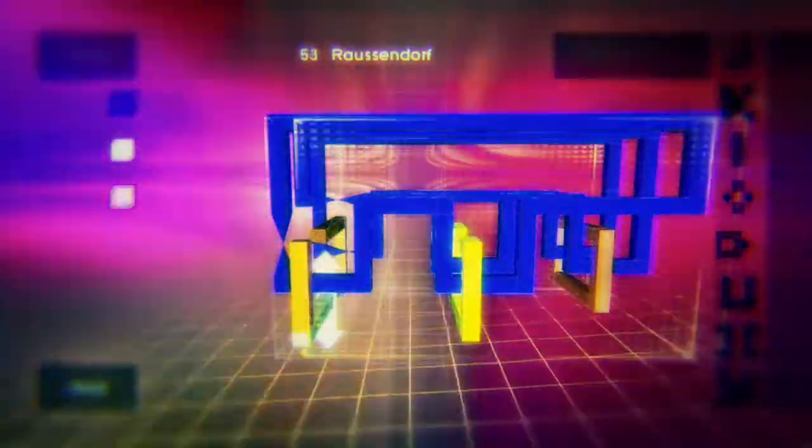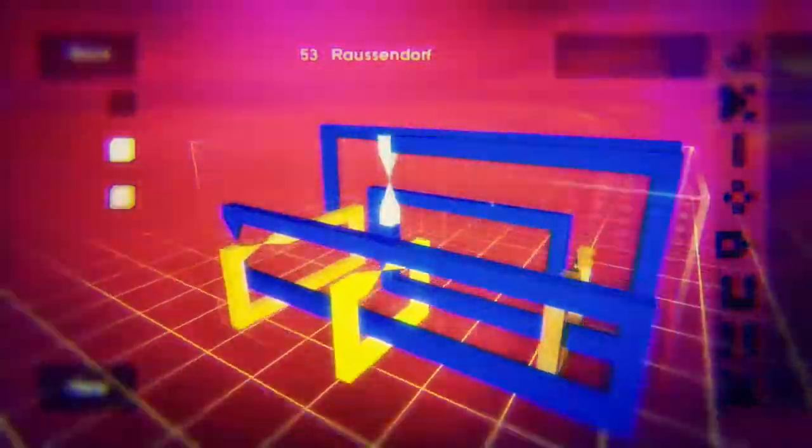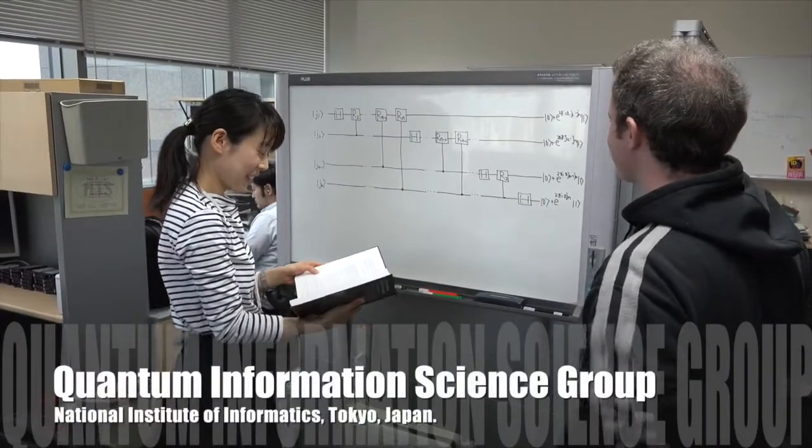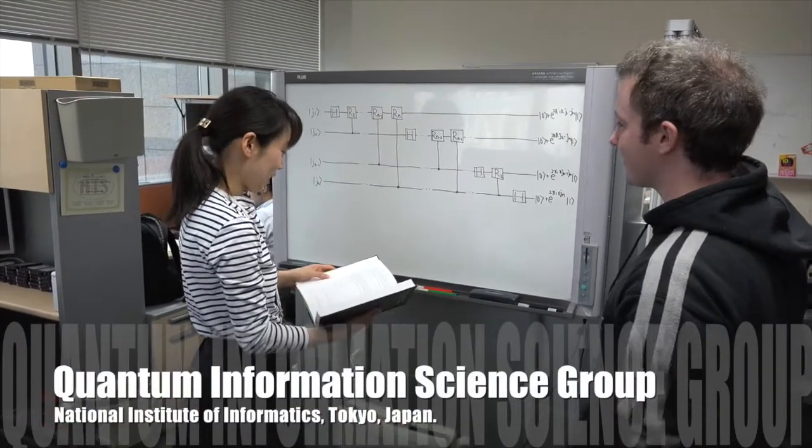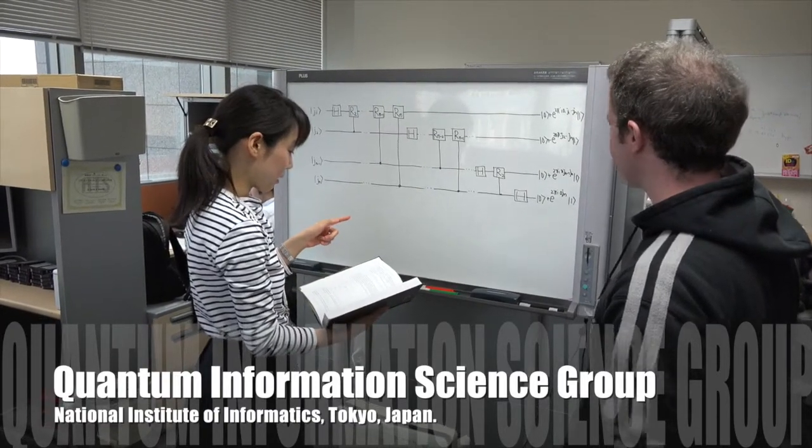These complicated-looking shapes combine both the quantum algorithm itself and the powerful error correction needed to ensure an error-prone quantum computer still gives the right answer. The details about how this works can be separate from the problem Mequanix is designed to solve. No expertise in quantum physics or quantum computing is necessary to make a real-world impact on cutting-edge research.